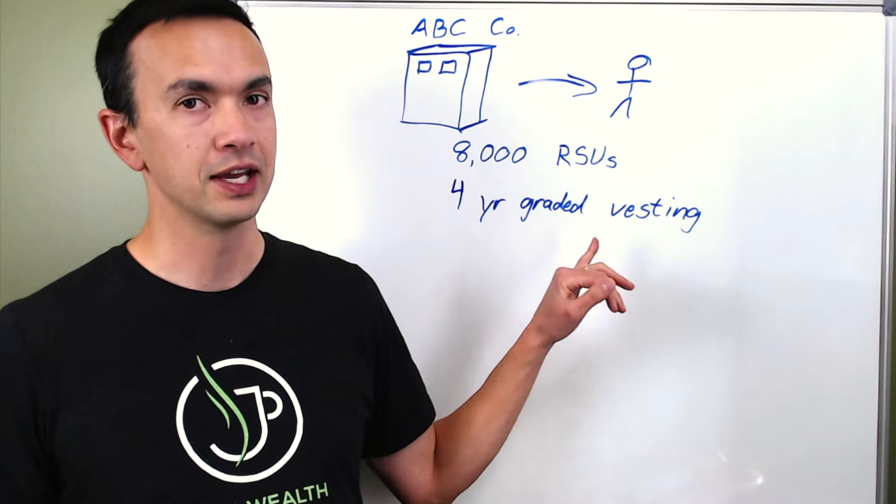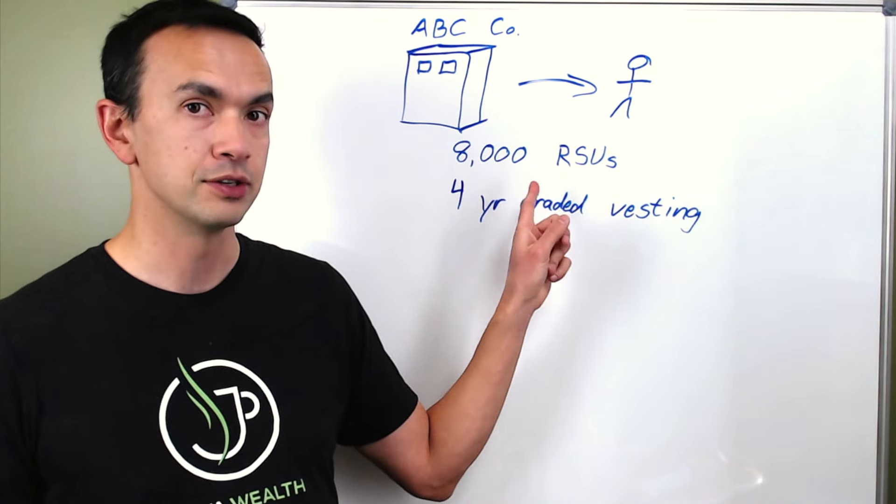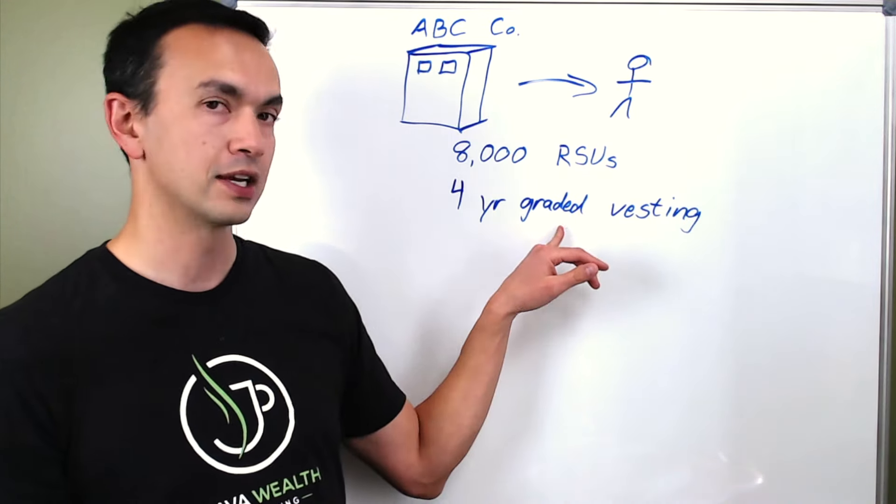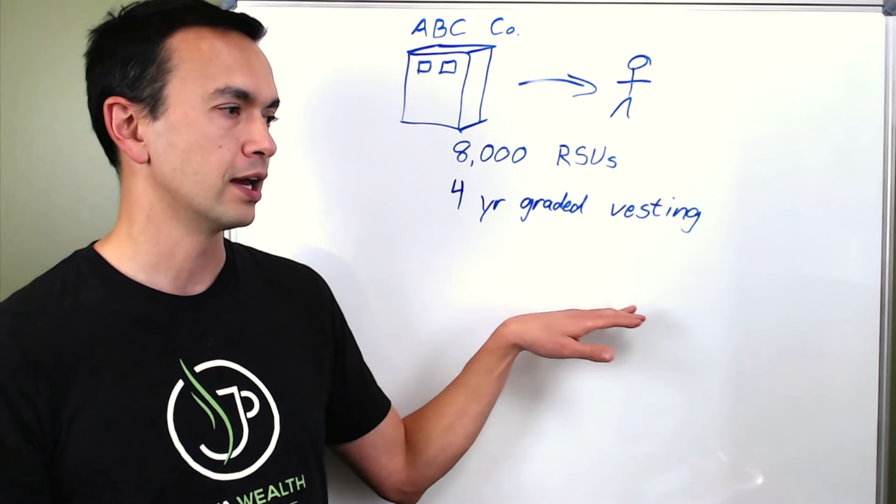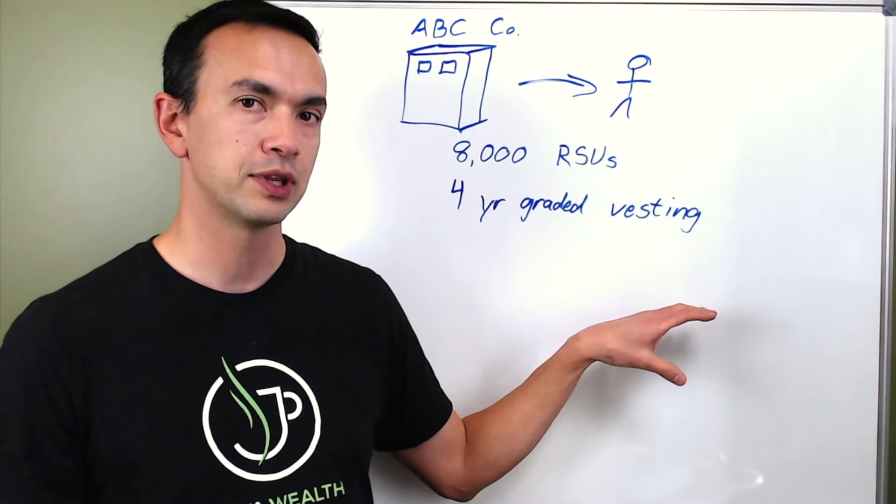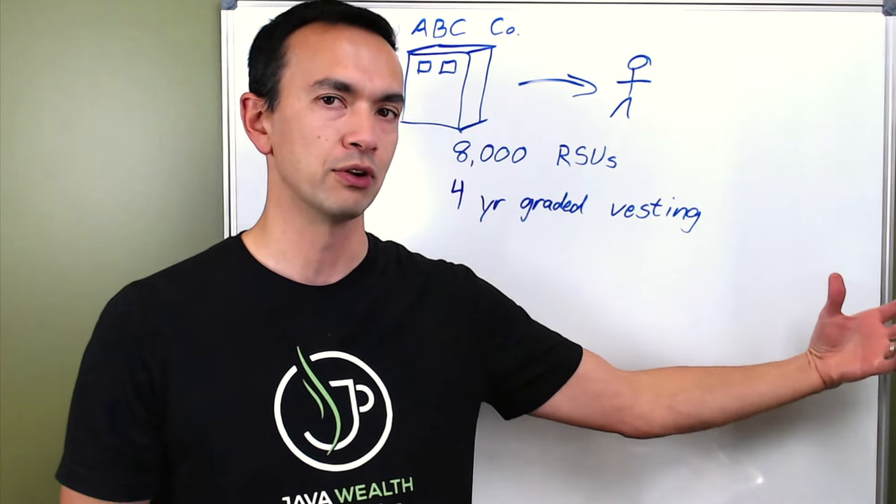All this part is saying is that in order to get the 8,000 RSUs and turn them into shares of stock, then you have to stick around for four years. And the fact that it's graded means that you get a certain amount every year. So if you stick around one year, then you'll get 2,000. And in another year, you'll get another 2,000 until you're there for four years.